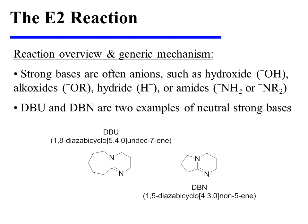The E2 reaction necessitates a strong base that will actively pull the proton from the beta position. Strong bases are often anions, such as hydroxide, alkoxides, hydride, or amides. There are, however, neutral strong bases as well. DBU and DBN are two examples of neutral strong bases.